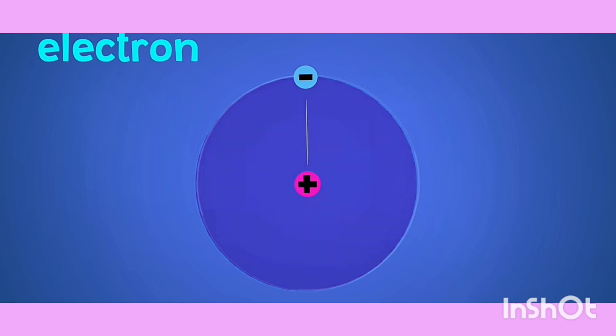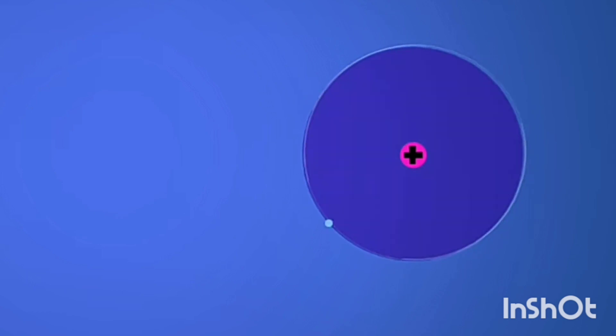This pull between the positive proton and negative electron is called the electric force, and it's always there. So whenever a free electron gets close enough to a lonely proton, they become part of the same atom.